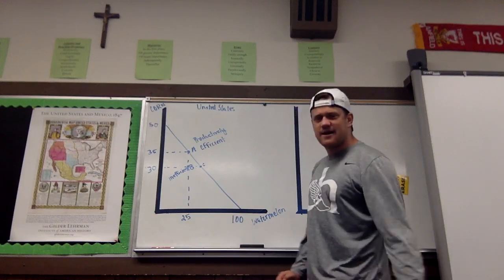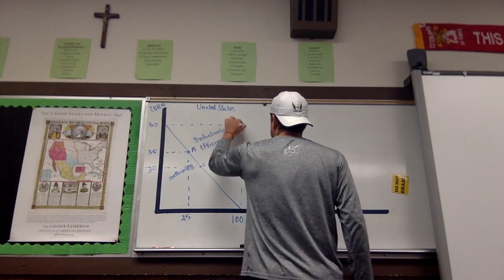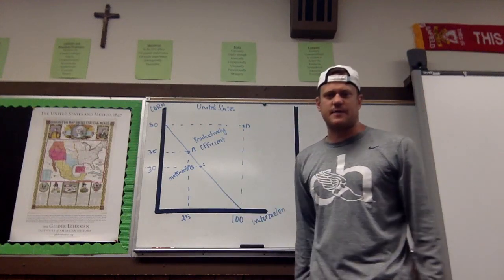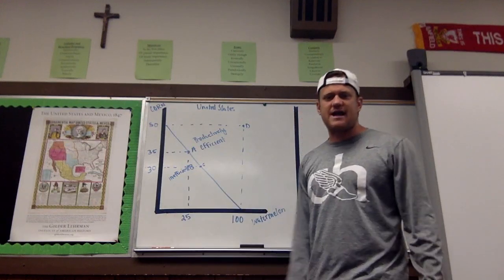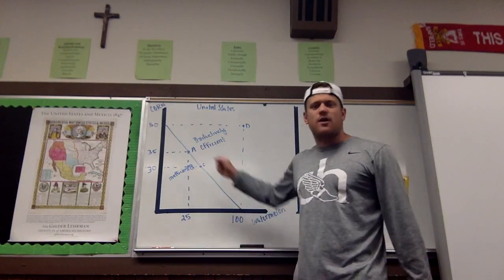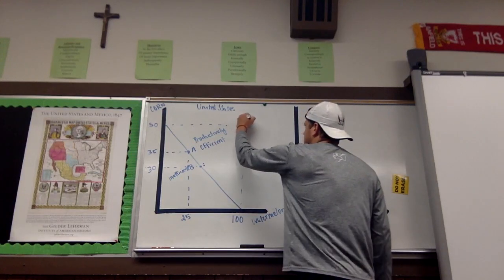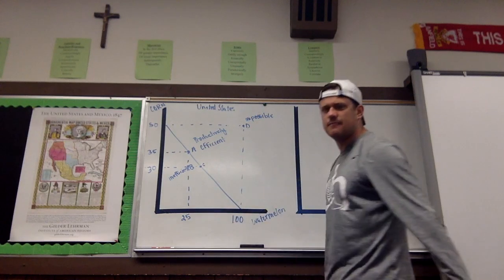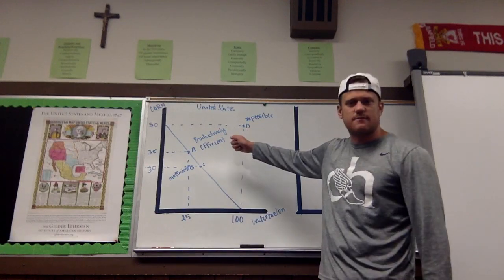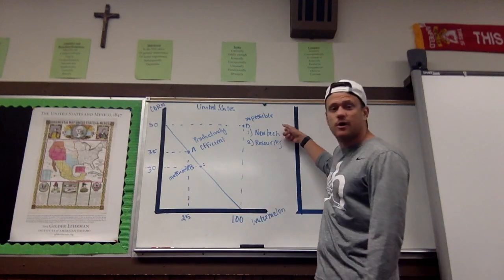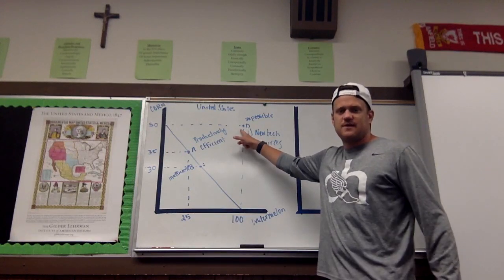Let's say we have a point outside of, to the right of, the production possibility frontier. Here at point D, we produce 50 corn and 100 watermelon at the same time. Given the current economy in this example, we know we can't produce both 100 and 50 at the same time because we're already productively efficient along the curve. At point D, we would say it is currently impossible. The only way to get to point D is through economic growth — new technology and resources that would push the curve outward to point D.